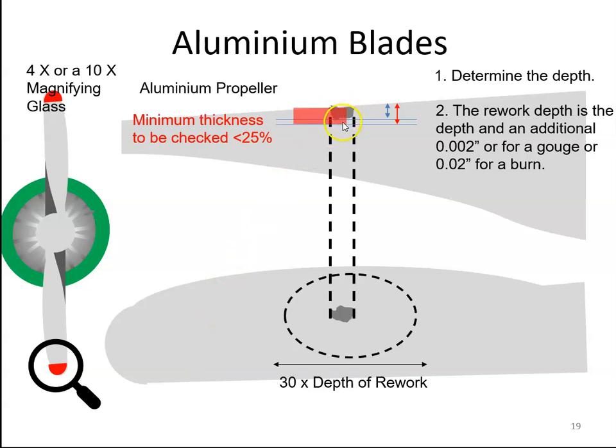Now, this distance here, the depth that we've gone down, we need to check that off the chart. But generally, it can't be more than a quarter of the thickness of the blade. And this distance here shouldn't exceed a quarter of the chord length or four inches.